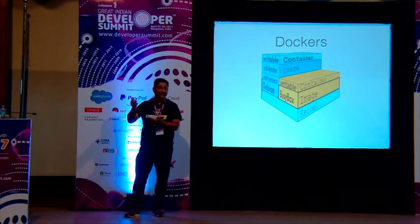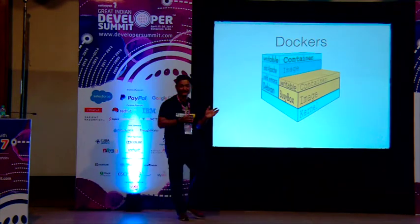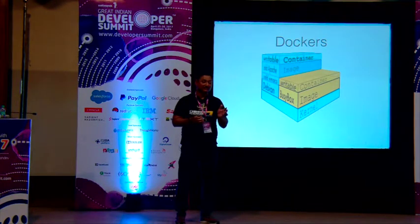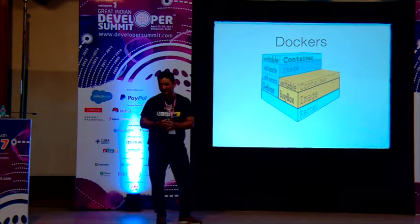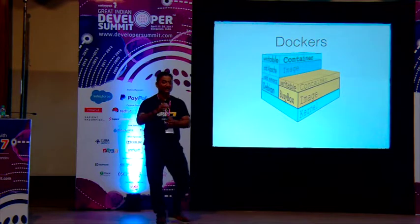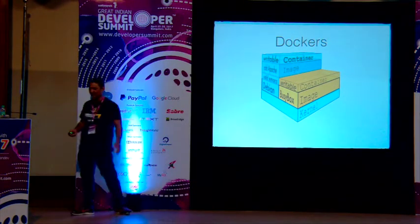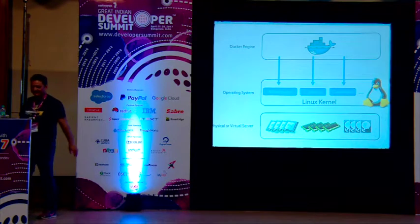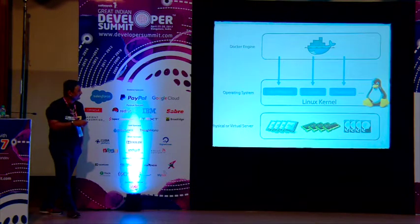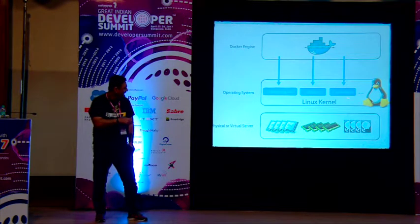Earlier, if you had one simple change you had to retest the entire application server. With Docker's layered approach it's more contained. From the Docker engine perspective, it provides namespaces, cgroups, and capabilities — all part of the Linux kernel. It takes care of CPU, memory, and disk space — all three things.